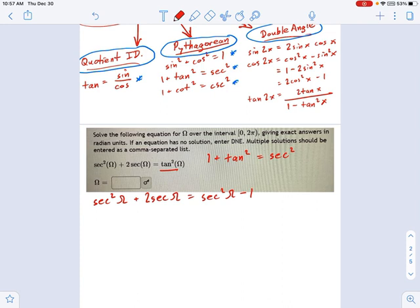And now we can just combine some terms. I have a secant squared on the left, a secant squared on the right. Those are going to cancel out. This is going to simplify pretty fast, actually. So I get two secant equals negative one. That means secant of omega equals negative one half.